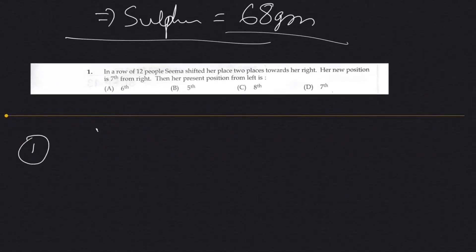In a row of 12 people — 12 people, okay — Sima shifted her place two places towards her right. Her new position is 7th from the right. 1, 2, 3, 4, 5, 6, 7.